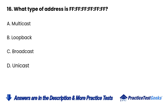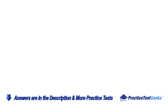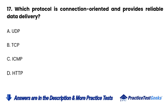Question 16: What type of address is FF:FF:FF:FF:FF:FF? A. Multicast. B. Loopback. C. Broadcast. D. Unicast.